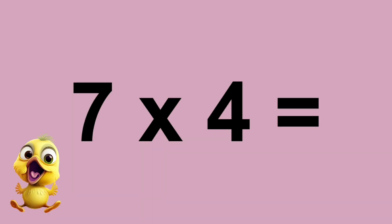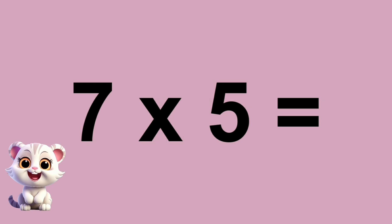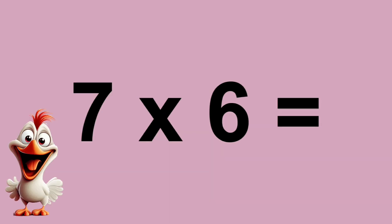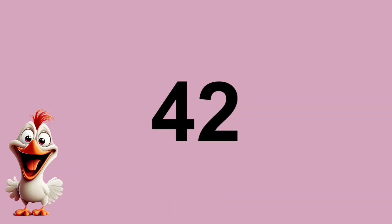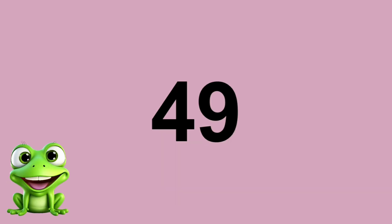Seven times four equals twenty-eight. Seven times five equals thirty-five. Seven times six equals forty-two. Seven times seven equals forty-nine.